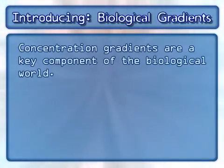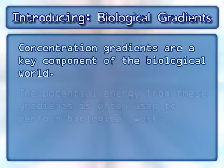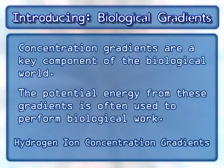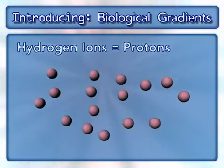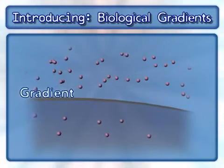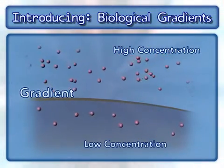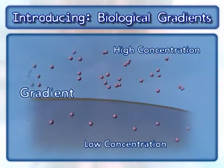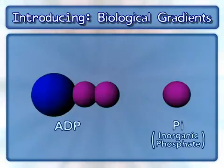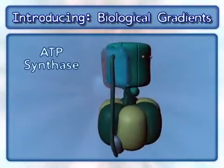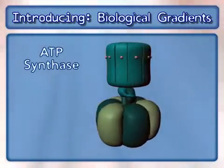Concentration gradients are a key component of the biological world. The potential energy from these gradients is often used to perform biological work. Here we will focus on hydrogen ion concentration gradients. Hydrogen ions are also known as protons. A gradient exists when there is a higher concentration of a molecule in one compartment compared to a neighboring compartment. This animation will demonstrate how the potential energy that results from a hydrogen ion gradient uses ADP and inorganic phosphate, also known as Pi, to synthesize ATP. This process involves an enzyme complex called ATP synthase.